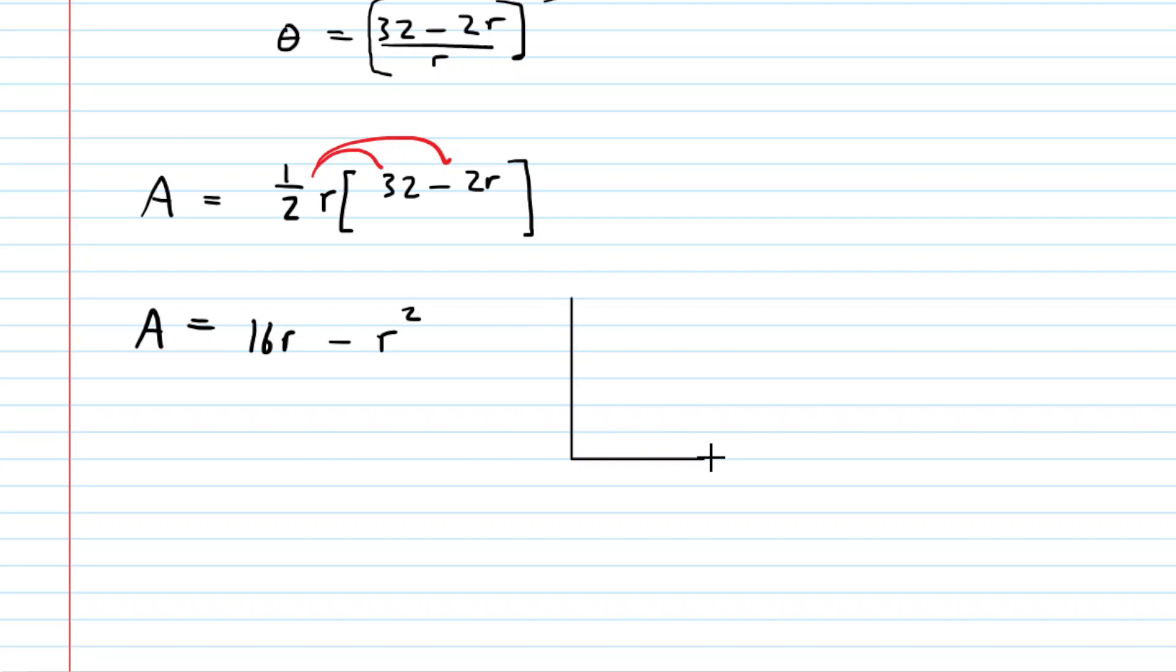You could think of this graphically for a moment. You could think of the area on the vertical axis as a function of the radius on the horizontal axis. And we would have some curve, and at some point, we would end up with a maximum, maximum area.